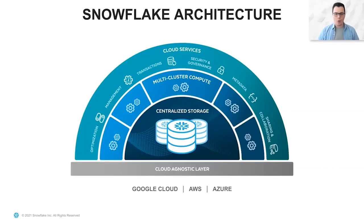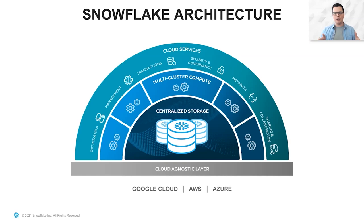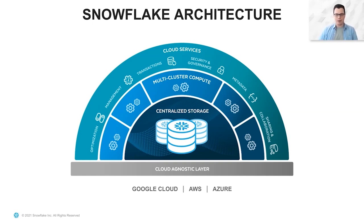What actually powers the Snowflake data cloud is Snowflake's unique architecture. At the basic level, at the very basis, it is the cloud agnostic layer. What's cool about this is that not only is Snowflake running on these major cloud providers, but Snowflake is actually using the native cloud providers' technologies and services when running on them. For example, if you're using Snowflake's external functions capability, you're actually doing that with an AWS Lambda or with a GCP cloud function.